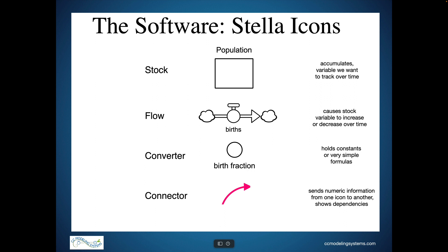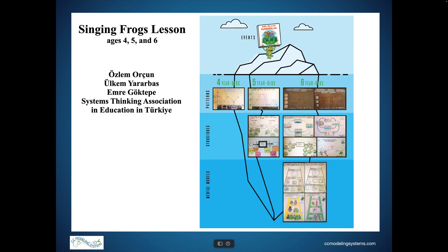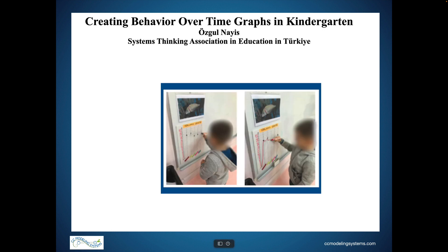I will show you three examples of systems thinking lessons used with students ages 4 to 9. A storybook written by Turkish preschool teacher Uslem Orkun involved frogs making noise in a pond near some homes, annoying the homeowners. You can see the behavior over time graphs made by 4, 5, and 6-year-old students, as well as the pre-made stock-flow structures students use to add their information via pictures and other systems thinking tools the teachers use to help students understand the story.